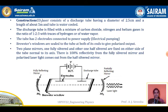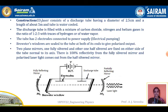Now we start with the construction of a CO2 laser. It consists of a discharge tube having a diameter of 2.5 centimeters and a length of about 5 meters, and the tube is water-cooled to reduce the heat generated by the transitions. The discharge tube is filled with a mixture of carbon dioxide, nitrogen, and helium gases in the ratio of 1:2:3, where traces of hydrogen or water vapor may also be present. The active medium is the carbon dioxide, nitrogen, and helium gases.